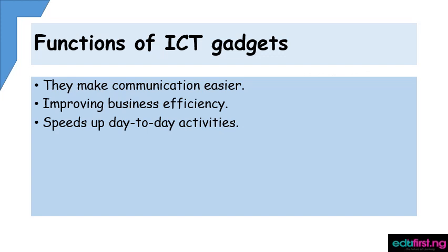The aforementioned ICT gadgets perform a series of functions. One of these functions is that they make communication easier. Before the arrival of ICT gadgets such as phones and computers, communication was quite stressful between two distant parties. This is because they would need to write a letter, and this letter might take weeks or months to even arrive at the intended location. But with gadgets such as a mobile phone, one can easily make a phone call or send a text message that arrives at the intended destination within seconds.